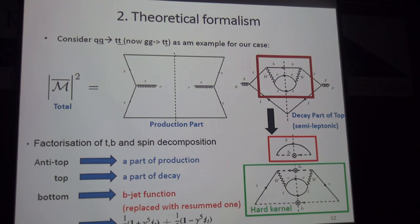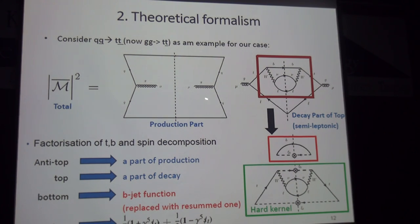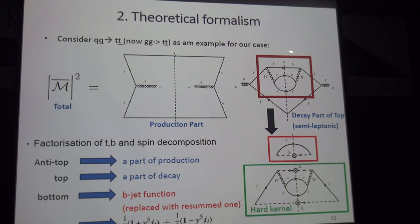The time is limited, so let me summarize our formalism. We consider qq-bar to tt-bar to establish our formalism. The squared amplitude is summarized as a product of two pieces: the production part times the decay part, where the top quark spin appears in the decay part. We consider semi-leptonic decay for a simpler analysis. By using a Fierz identity, we can change the flow of the fermion line and factorize the b-quark line. This gives the original decay amplitude, factorized into a part called the hard kernel and the b-quark line contribution.